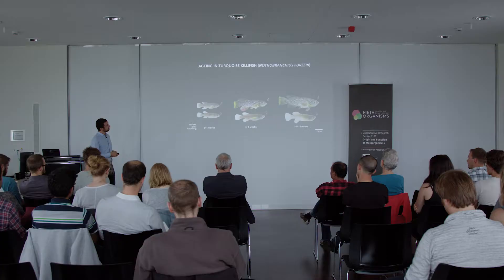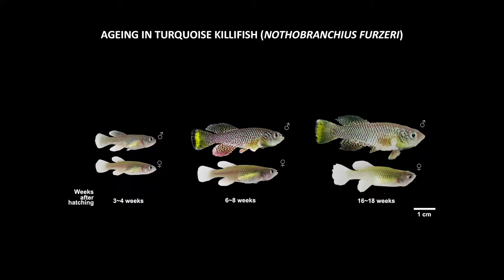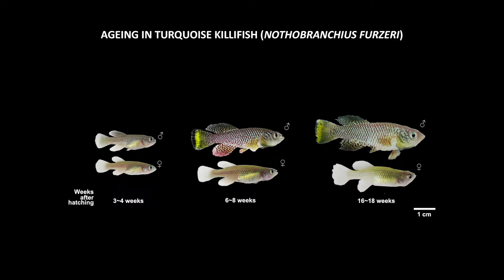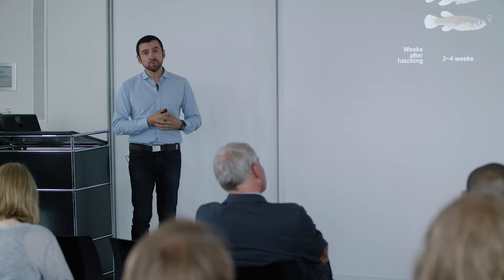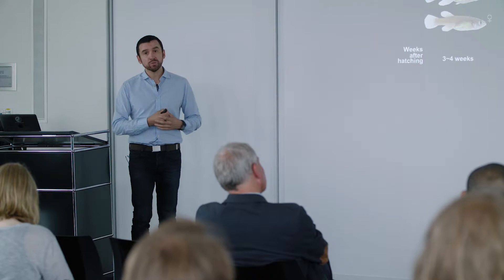The turquoise killifish has a median lifespan of about four months. These are adult killifish — males on top and females on bottom — and you can see interesting changes happening with age. This is a fully reproductive adult, and then you see dramatic changes as they get older. These four-month-old individuals look particularly decrepit. This is the same individual at five weeks of age, and then seven weeks later they really undergo dramatic changes in their appearance.